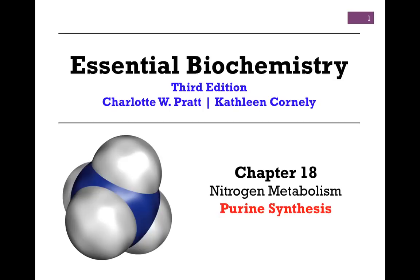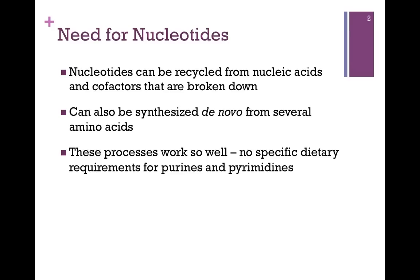In our next lesson on nitrogen metabolism from Chapter 18, we want to look at purine synthesis. Nucleotides can be recycled from nucleic acids or cofactors that are broken down. We can also make what we need de novo, that is from scratch, and we need amino acids to do so. These processes work so well that we have no specific dietary requirements for purines and pyrimidines — we don't need to include them in our diet because we can either recycle or synthesize what we need.